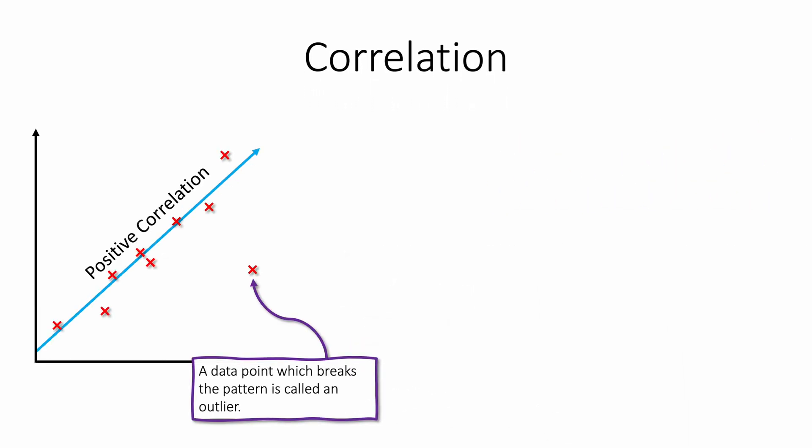You should be familiar with the ideas of correlation. Here we have a scatter graph with a positive correlation, and I'm also pointing out a data point that is an outlier. That data point clearly does not fit the correlation of the graph and we call that an outlier.